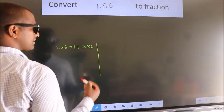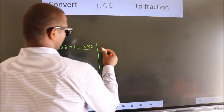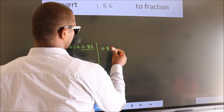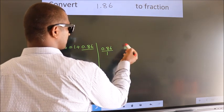Next, convert this to fraction here. So 0.86. To convert this to fraction, we have to move this decimal after 2 numbers.